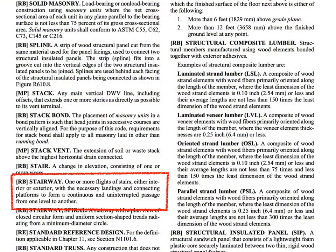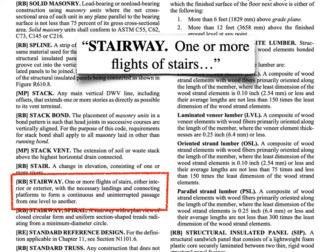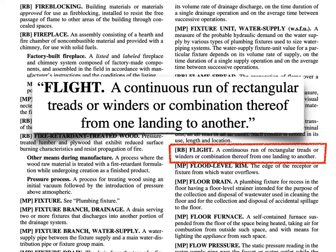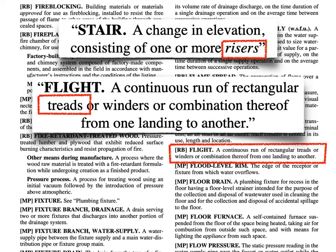Now below the stair definition, there's a definition for stairway, and it starts out by saying that it's one or more flights of stairs. We know what a stair is, but what's a flight of them? We can go to the definition for flight, and let's read this one completely: it's a continuous run of rectangular treads or winders or combination thereof from one landing to one other landing. So a flight is a bunch of treads between landings, and a stair is one or more risers between elevations.